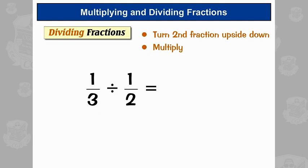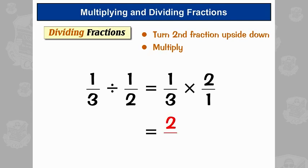With this example, the third stays as it is. The second fraction, instead of 1 over 2, we put 2 over 1. Then we times the two fractions. Timing our tops: 2 times 1 is 2. And the bottoms: 3 times 1 is 3. So it's 2-thirds.